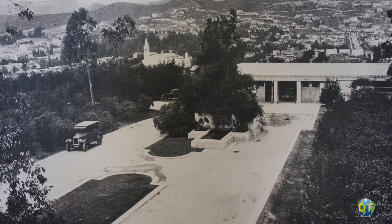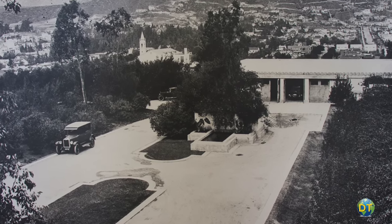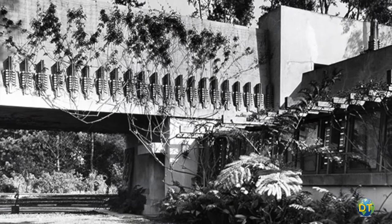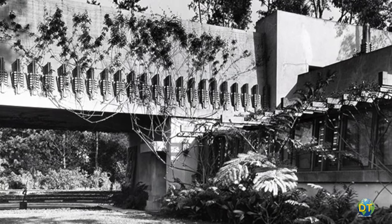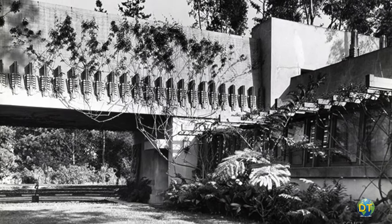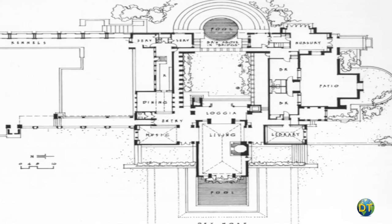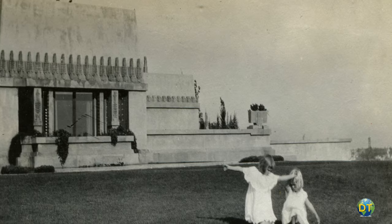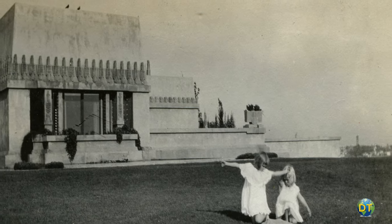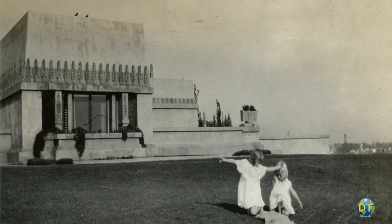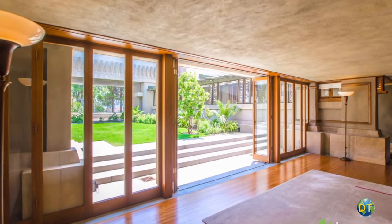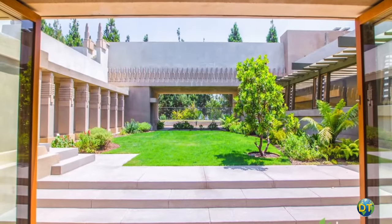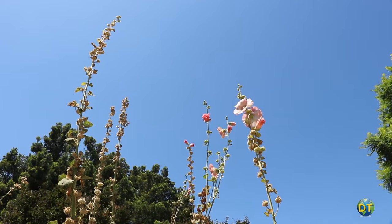Construction of the house began in 1919 and was finished in 1921. Hollyhock House is unique in the work of Frank Lloyd Wright. It was an attempt to incorporate his ideas in architecture and create a seamless line between the interior and exterior of the house's design.